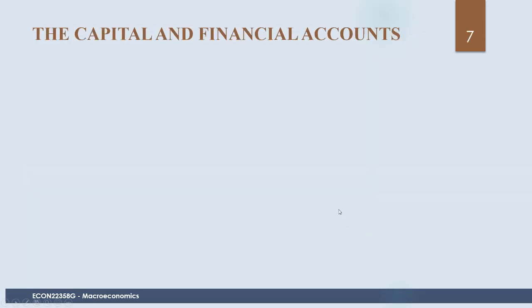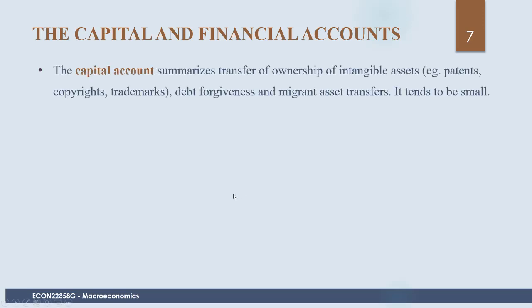The other major account is the capital and financial account. Remember, the current account included investment income from stocks and bonds, but it never included the actual flows associated with purchasing financial assets or foreign direct investment — such as purchasing a plant or other physical capital. The capital account summarizes transfers of ownership of intangible assets such as patents, copyrights, and trademarks.